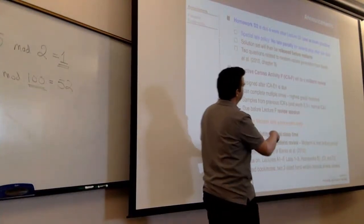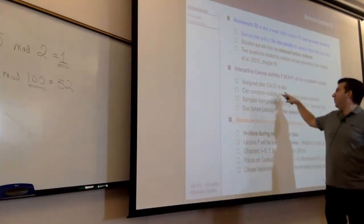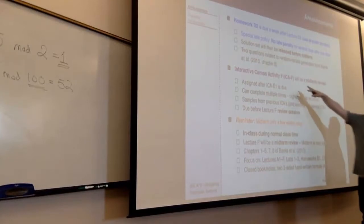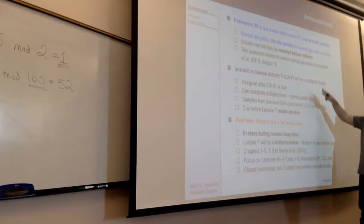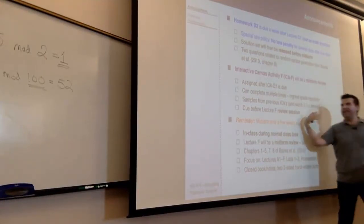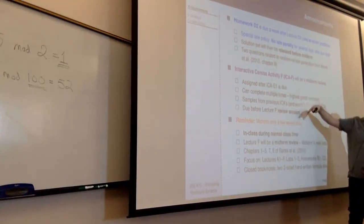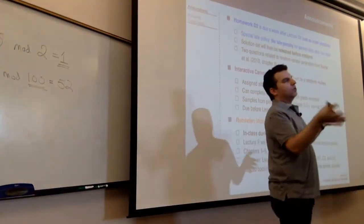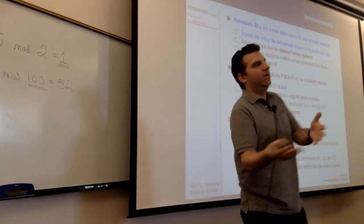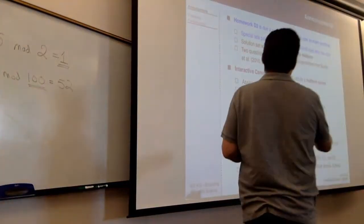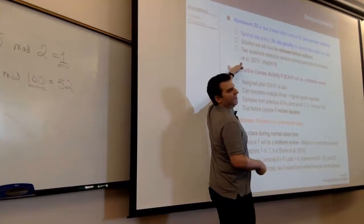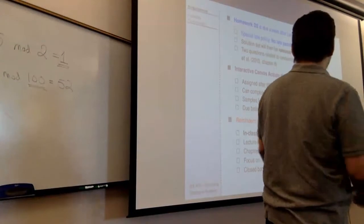There's going to be a Canvas activity F, which once E1 is done will become available and randomly samples from all the Canvas activities before it. It's meant to be a midterm review. You can take it as many times as you want and it's worth about three and a half times the points of a normal activity. About 99% of the questions are ones you've seen before. It drops the worst seven assignments, so this can end up compensating for a lot of other assignments. It's meant to force you to revisit questions you may not have seen for several weeks.